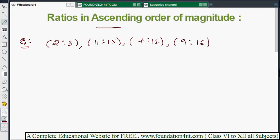Which is smaller, you need to find out and next small. Like that you need to write in ascending order after verifying which ratio is smaller or greater. First, given ratios if you write in fraction form: 2 by 3, 11 by 15, 7 by 12 and 9 by 16.